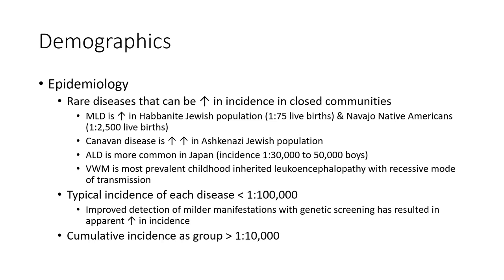Vanishing white matter is the most prevalent childhood inherited leukodystrophy, with autosomal recessive mode of transmission. Typical incidence of each disease is less than 1 in 100,000. Improved detection of milder manifestations through genetic screening has resulted in an apparent increase in incidence. Cumulative incidence as a group is more than 1 in 10,000.